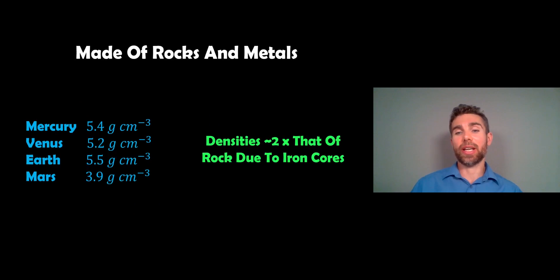Now density-wise they are approximately twice the density of typical rock, and that's because they're made of rocks and metals and they typically have an iron core as well. So the heavier elements are going to be in the center, which makes the overall density of the planet about twice that of rock. If you have a look at the densities here, Mars, Venus, and Mercury all have a fairly similar density, but Mars is a little bit less dense than the other ones.